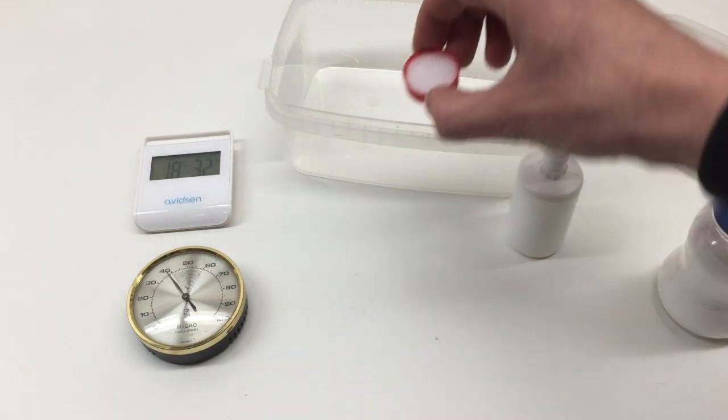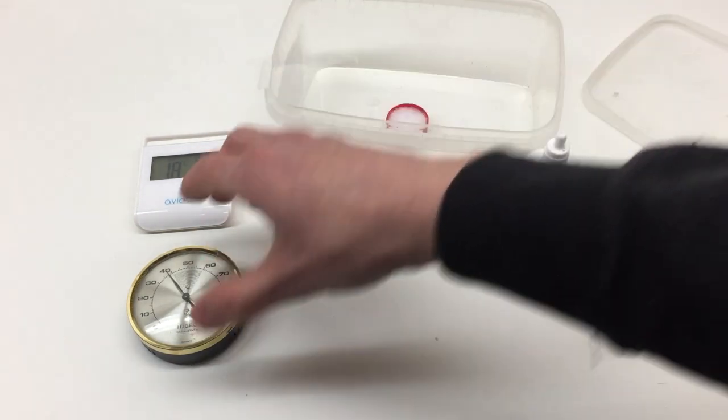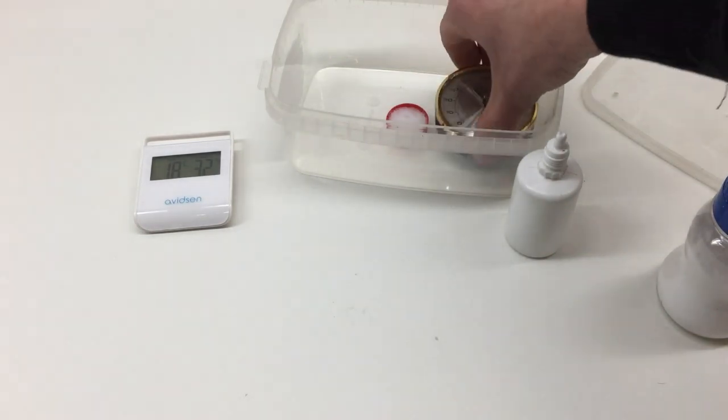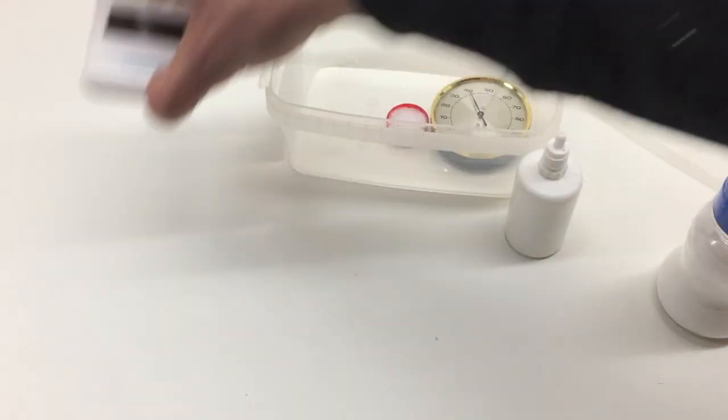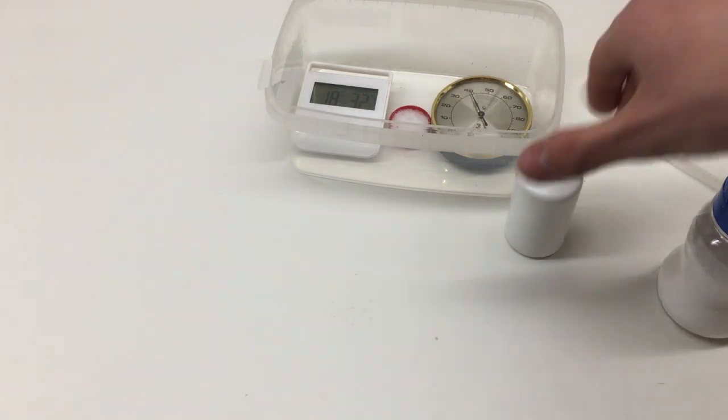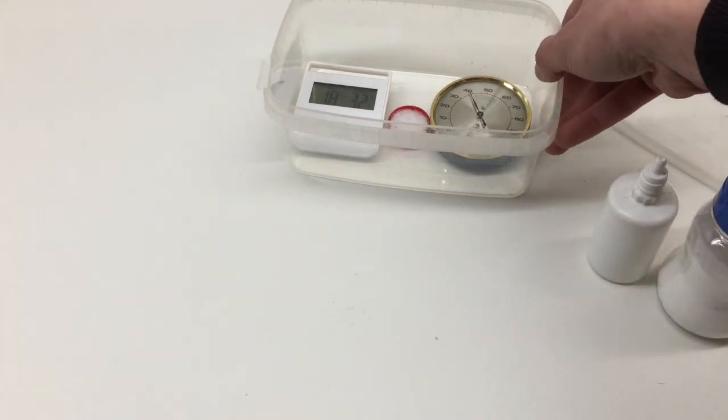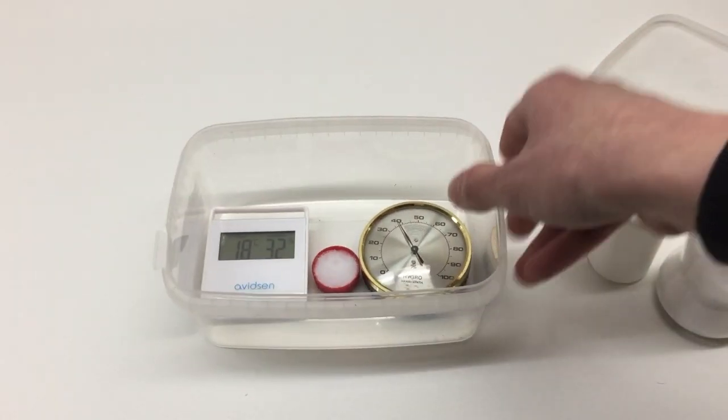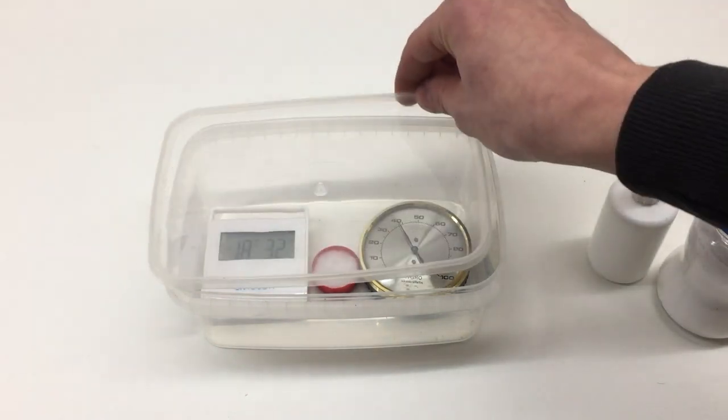Then simply take the bottle cap, place it into the container with your hygrometers, and then simply seal it up nice and tight.